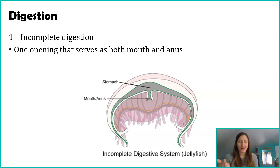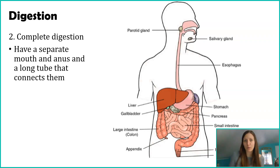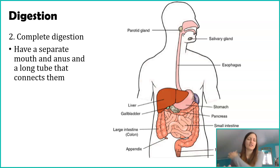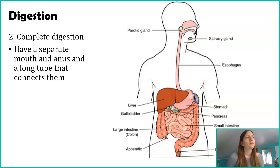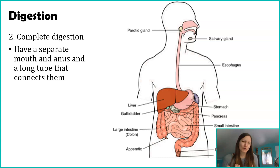What we see later on in the development of animals is we go from incomplete digestion to complete digestion. This is going to be something that you're more familiar with, because humans are a great example of complete digestion. A lot of animals in the animal kingdom do have complete digestion — more organisms have complete digestion than incomplete. With complete digestion, organisms have a separate mouth and anus, so food material goes in through one opening and waste goes through a separate opening.